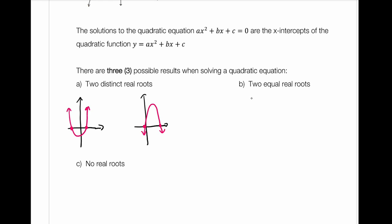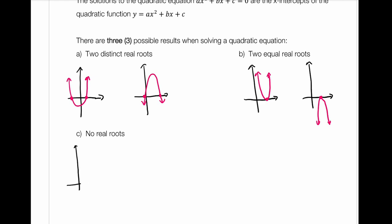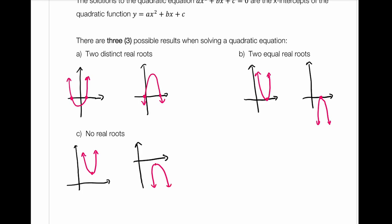Another option is you have two equal real roots, which means the vertex is on the x-axis. The third situation is no real roots — either the vertex is above the x-axis and it opens up, or the vertex is below the x-axis and it opens down. So those are the three situations that we could have.